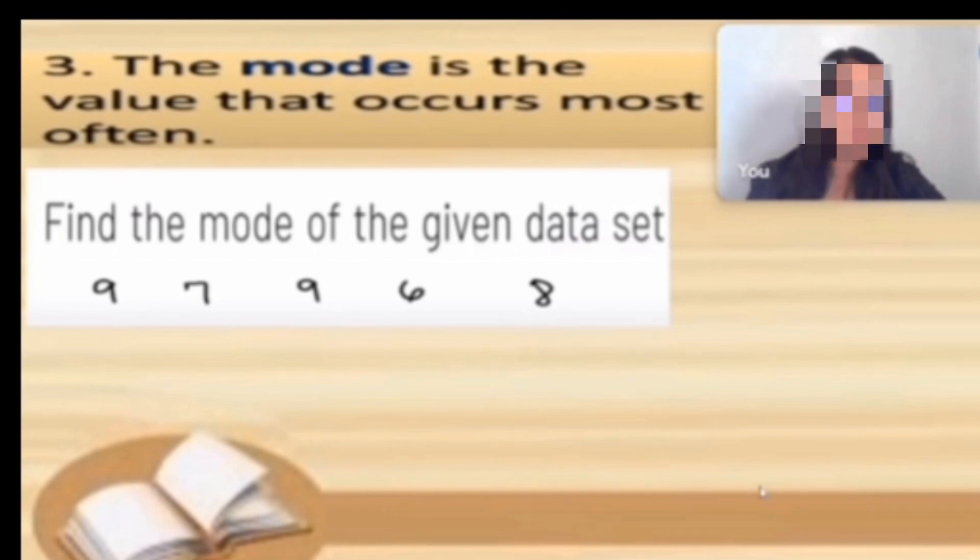Example: find the mode of the given data. We have 9, 7, 9, 6, and 8. In finding the mode, we need to arrange it in ascending or descending order, same as median. Again: 6, 7, 8, and 9.